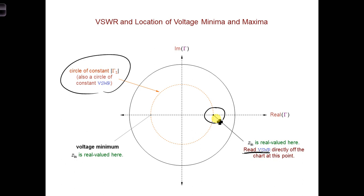Then the voltage minima occur where the circle of constant reflection coefficient magnitude, this orange dotted circle, crosses the horizontal axis to the left of the origin, so right here.